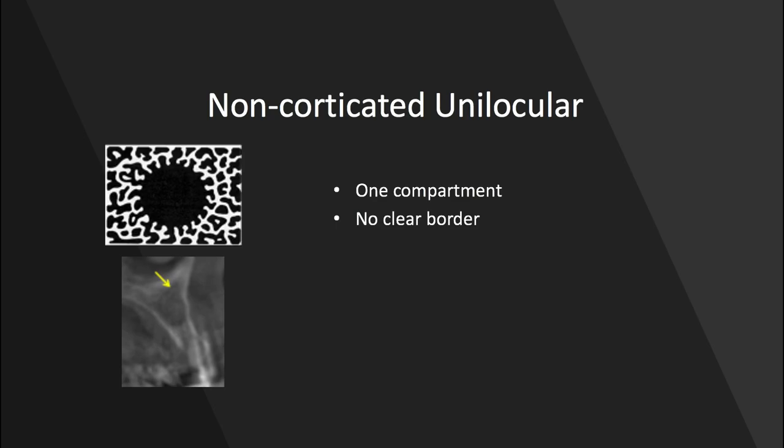We can also have the non-corticated variety. Again, we still have one compartment, but there's no clear border this time. For this radiolucency, there's no clear radiopaque border around it, and the edges are a bit more diffuse and hard to trace.